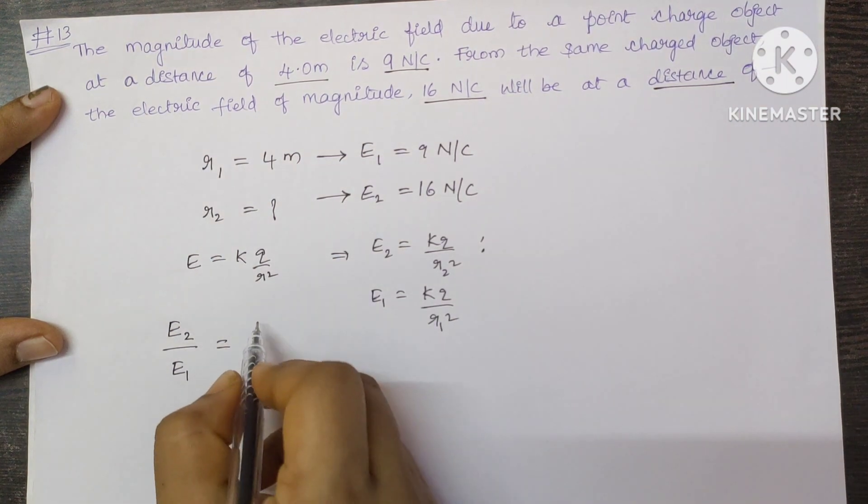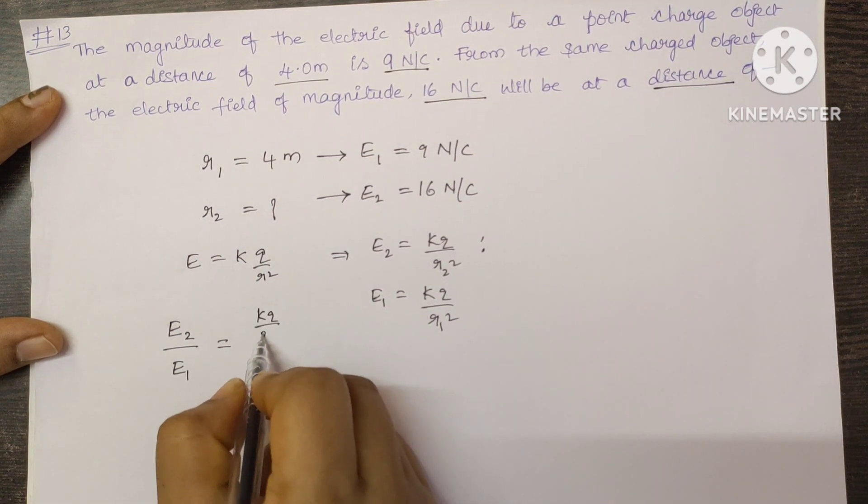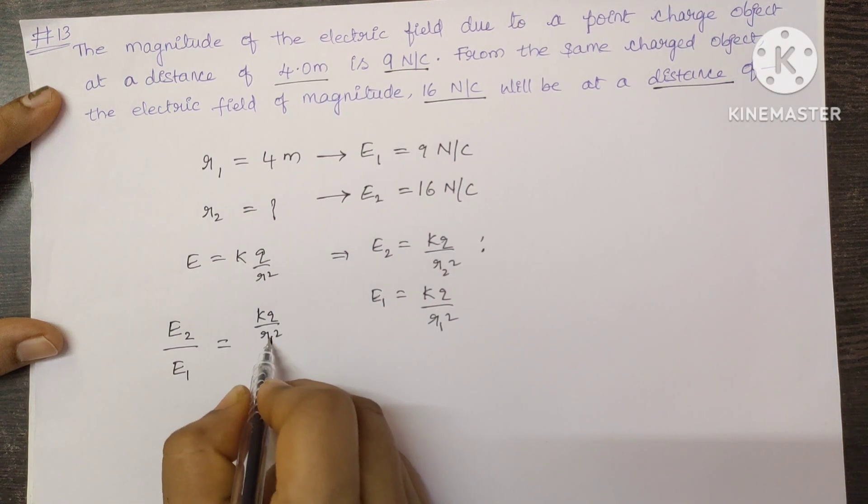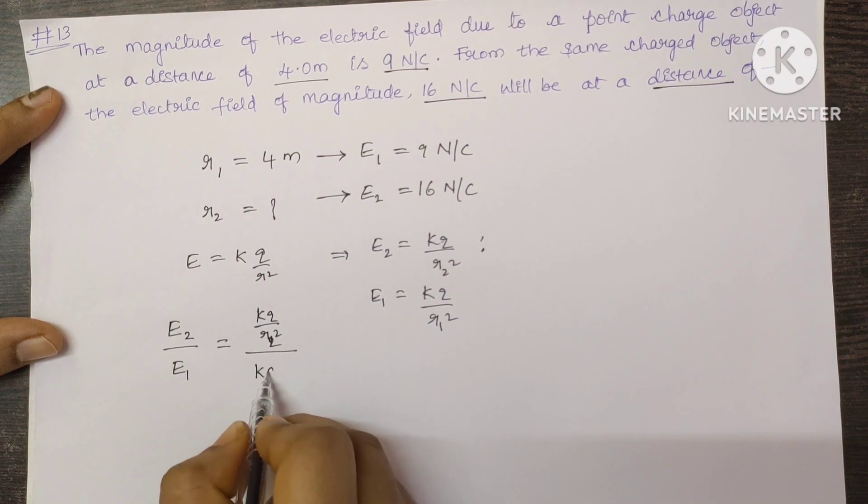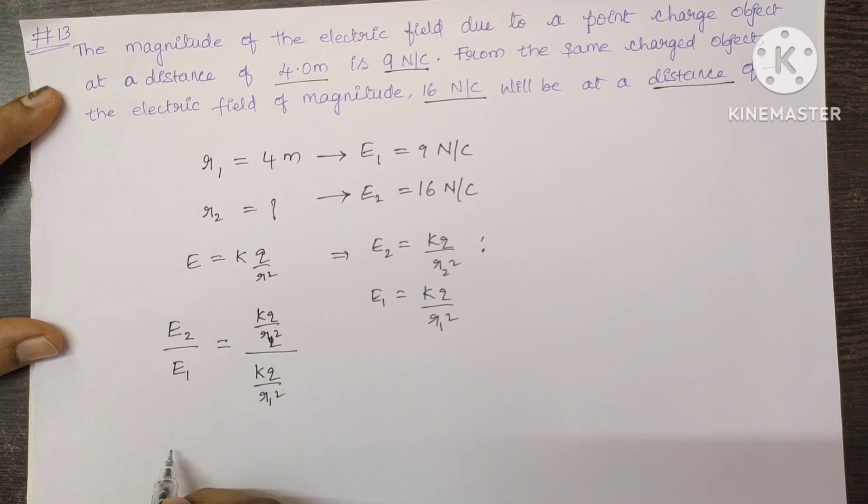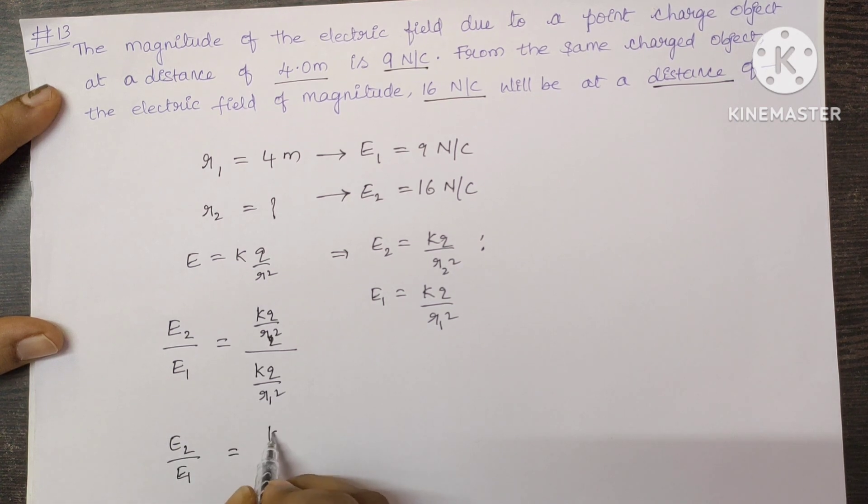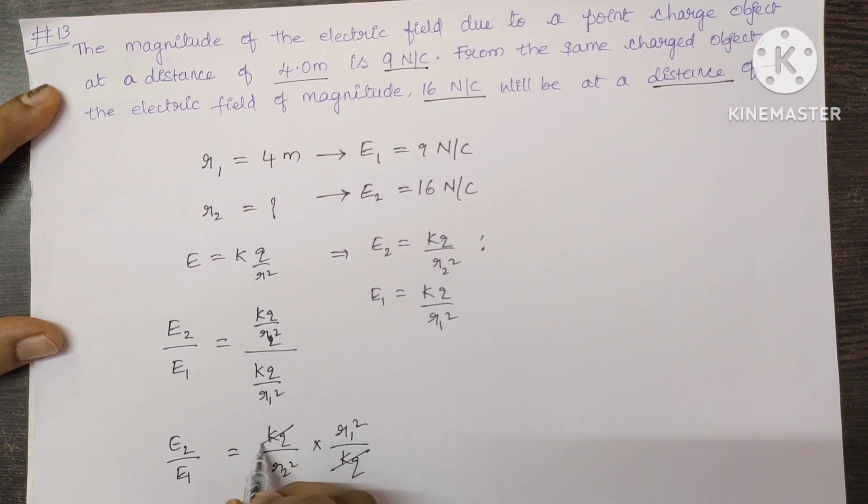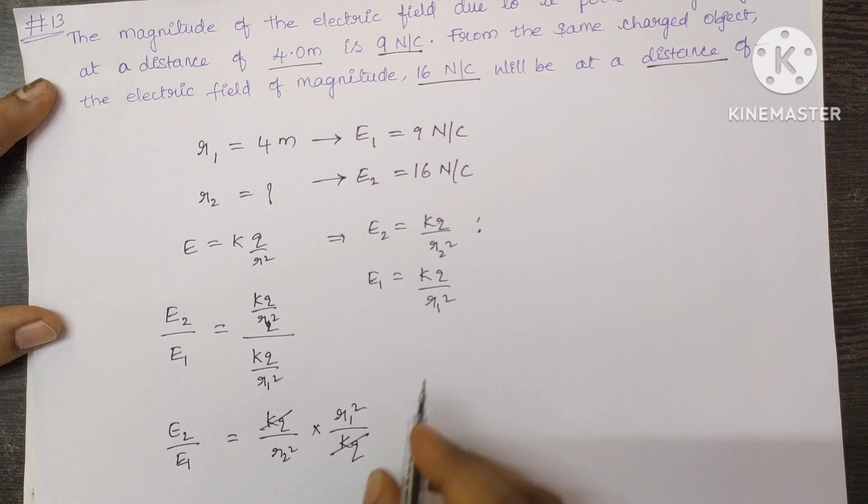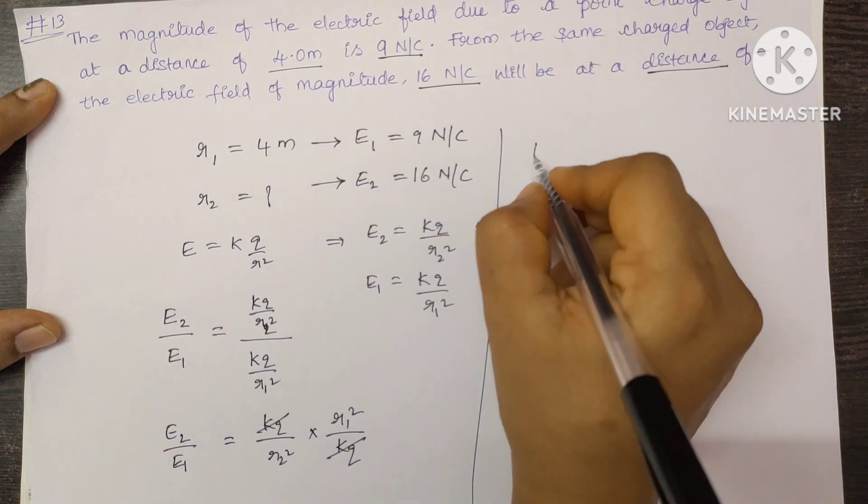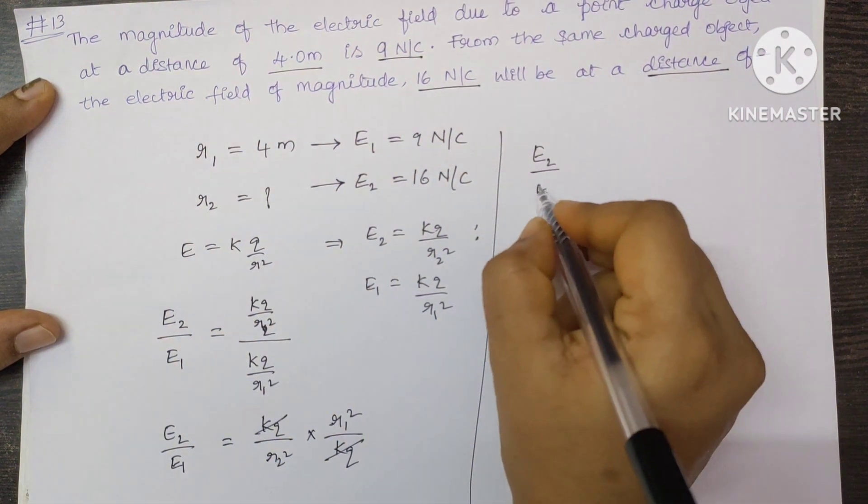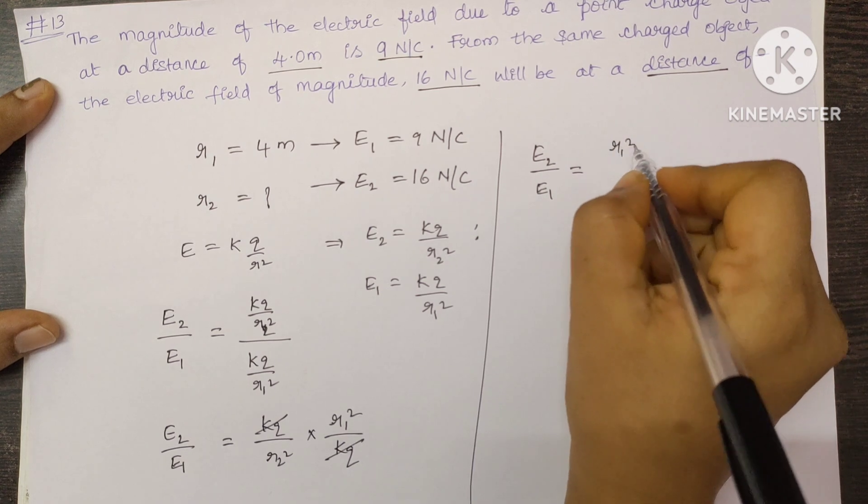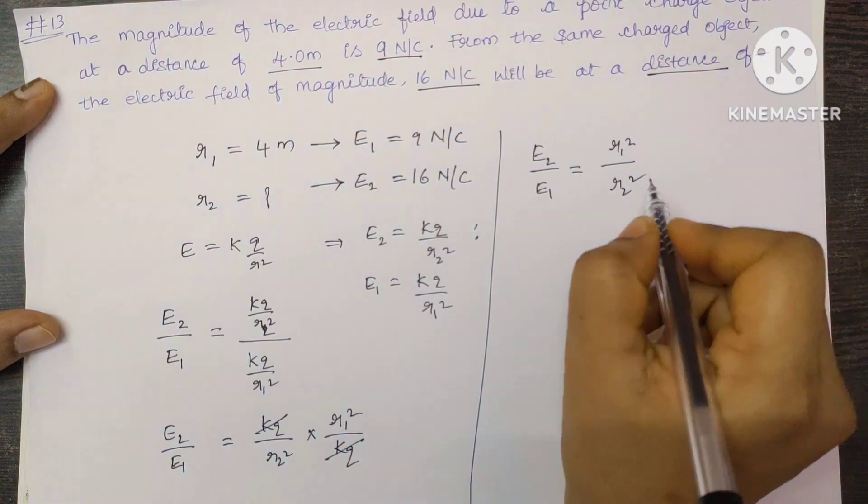Substitute the values here: KQ by R2 square divided by KQ by R1 square. So E2 by E1 is equal to KQ by R2 square times R1 square by KQ. Here KQ and KQ will get cancelled. The remaining terms: E2 by E1 is equal to R1 square by R2 square.